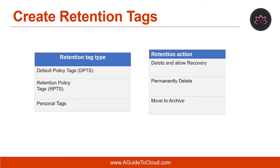There are three types of retention actions you can choose from depending on the type of retention tag you create. The first is delete and allow recovery — this allows the user to recover deleted items until the deleted item retention period is reached for the mailbox database or the user. The second is permanently delete, which purges the item from the mailbox database. The last is move to archive, which moves the item to the user's archive mailbox if one exists.